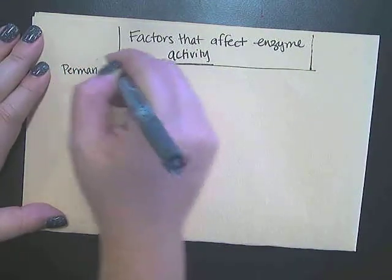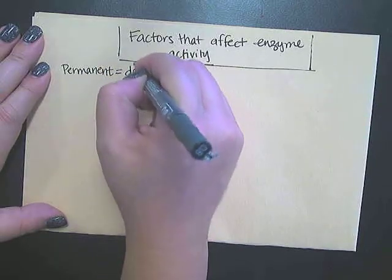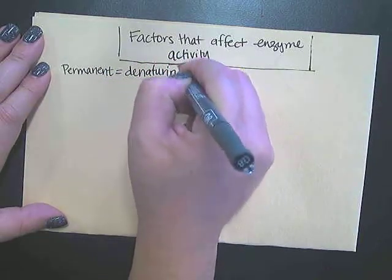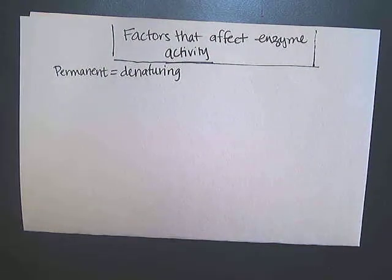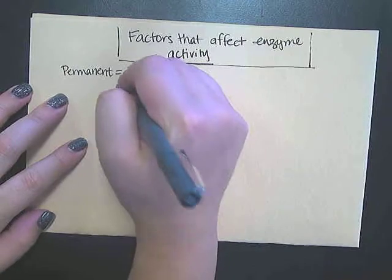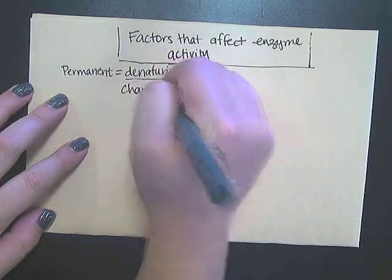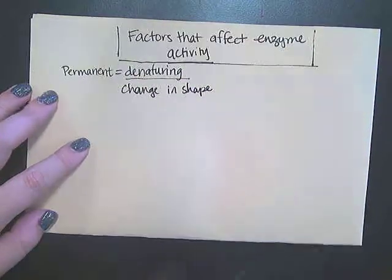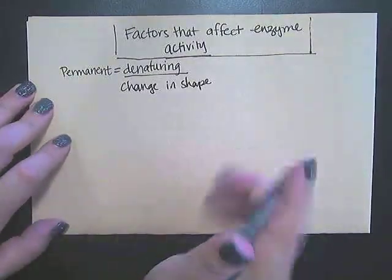The way that you can affect enzyme activity permanently is by denaturing the enzyme itself. There are several ways to denature an enzyme. By denaturing, we mean changing the shape — and of course, if you change the shape, you change the function. In this case, it will no longer function.